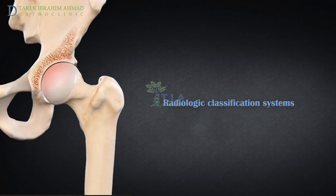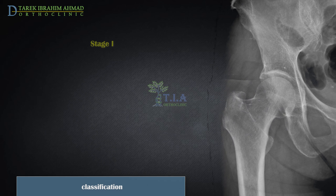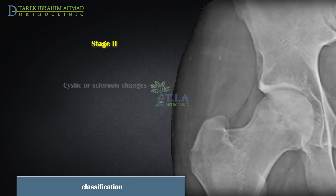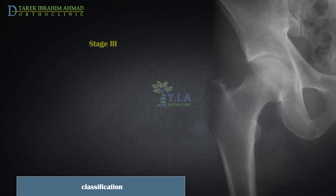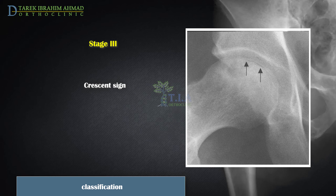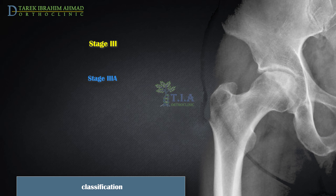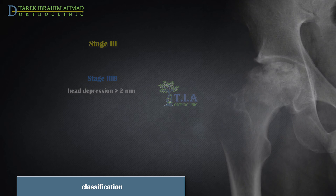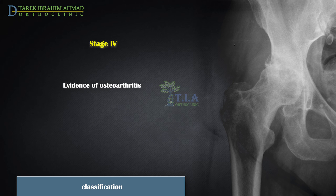Classification systems based largely on radiographic findings have been developed to guide treatment decisions. Stage 1: normal radiograph with abnormal MRI findings. Stage 2: no crescent sign, but radiographic evidence of sclerosis, osteolysis, or focal osteoporosis. Stage 3: subchondral fracture or flattening of the femoral head — Stage 3a with depression less than or equal to 2mm, Stage 3b with depression greater than 2mm. Stage 4: evidence of osteoarthritis with joint space narrowing and degenerative acetabular change.